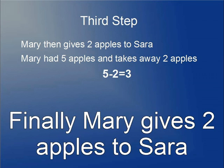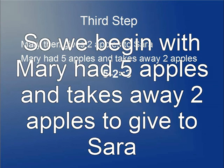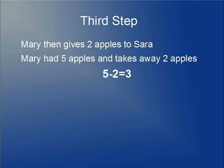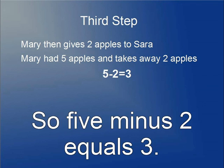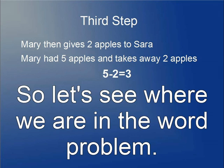Our third step is that Mary gives two apples to Sarah. Mary had five apples and takes away two to give to Sarah, so five minus two equals three.